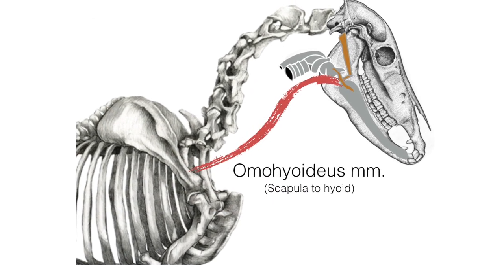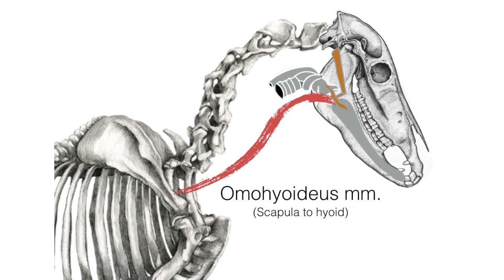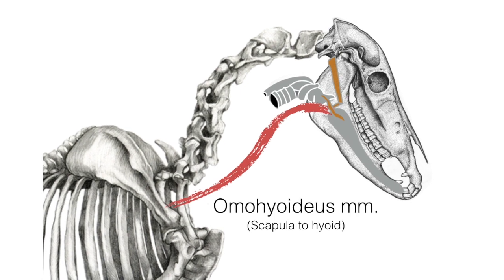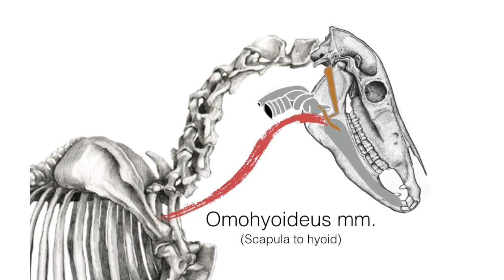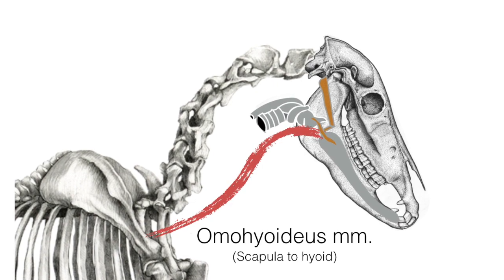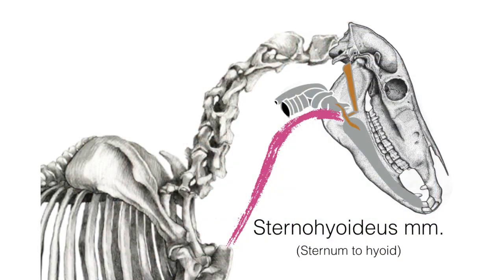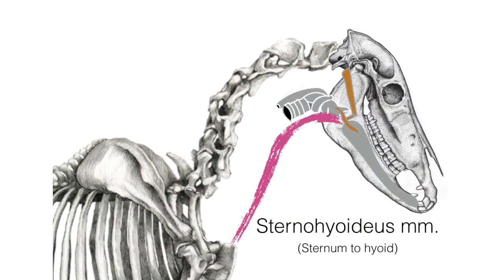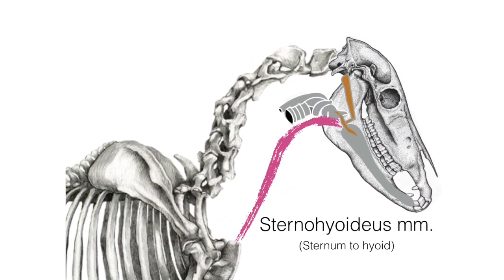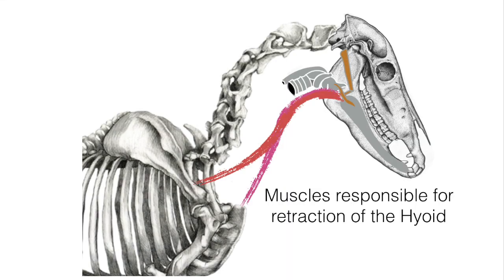The paired omohyoideus muscle connects the underside of each scapula to the lingual process of the basihyoid. This muscle serves to retract the tongue during swallowing, and excess muscle tension results in a restricted tongue and restricted shoulder movement. The sternohyoideus muscle connects the sternum to the hyoid and also serves to retract the tongue. Together, these two muscles are responsible for retraction of the hyoid.